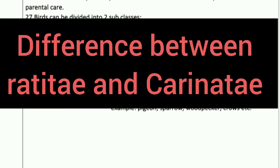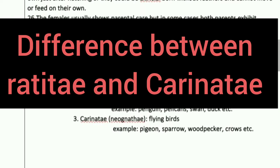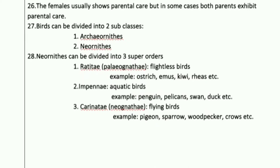In this video we are going to discuss the difference between Ratitae and Carinate. Birds can be divided into two subclasses: Archaeornithes and Neornithes. Neornithes is further divided into three super orders: the first is Ratitae, also called Palaeognathae; the second is Impennae; and the third is Carinate.